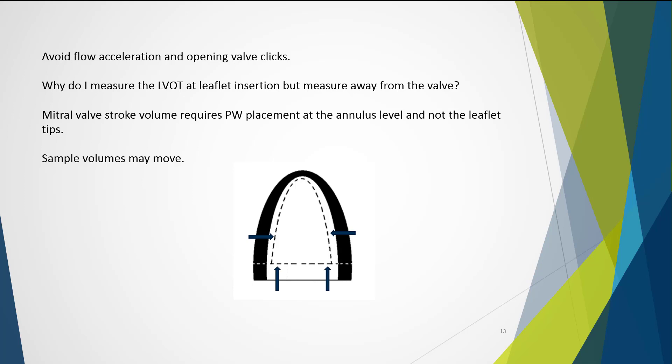A sonographer measuring the mitral valve stroke volume must always place the pulse wave sample volume at the annulus level and not at the leaflet tips. And this is a common error that many junior sonographers actually make. Sample volumes may also move from the position or the heart may move and the sample volume remains in the same place. Consider that the mitral valve annulus descends towards the apex in systole. So in systole do we not only get a circumferential contraction that moves inwards, but we also have this longitudinal contraction where the base of the heart moves towards the apex. So our sample volume, if was placed here, in systole the heart has actually moved on and now we're actually in the left atrium.